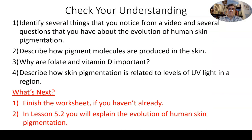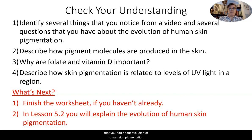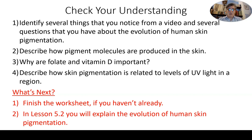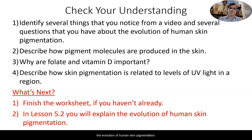Checking our understanding: you've watched the video and noted observations and questions about the evolution of human skin pigmentation, described how pigment molecules are produced in the skin, explored why folate and vitamin D are important, and described how skin pigmentation relates to UV light levels in a region. Your next steps are to finish the worksheet, then move to Lesson 5.2 where we'll use the evolution tool to explain the evolution of human skin pigmentation. Thank you so much for your time and hard work — I look forward to seeing you in the next one.